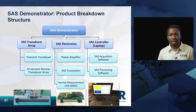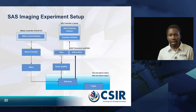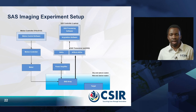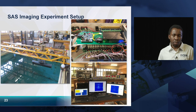Here is a chart showing the breakdown structure of the system. It has three main components: the transducer array, the electronics, and the controller. This is the interface diagram for the experimental setup. Here are some pictures showing the testing of the system in our underwater testing facility — the system placed in the water tank, the electronics on the top right, and then the controller setup.